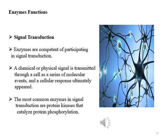Enzymes play an important role in all biochemical reactions occurring in cells. In terms of enzyme functions, the most important is signal transduction. Enzymes are capable of participating in signal transduction, where a chemical or physical signal is transmitted through a cell as a series of molecular events, and a cellular response ultimately appears. The most common enzymes in signal transduction are protein kinases that catalyze protein phosphorylation.